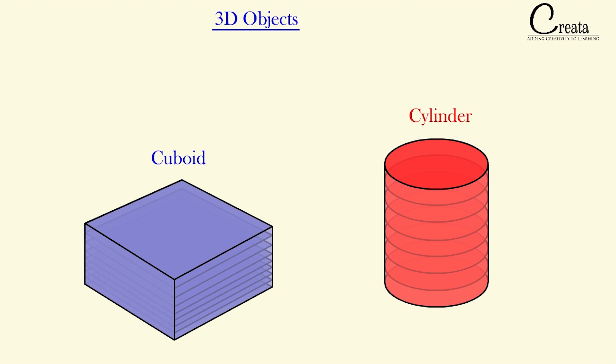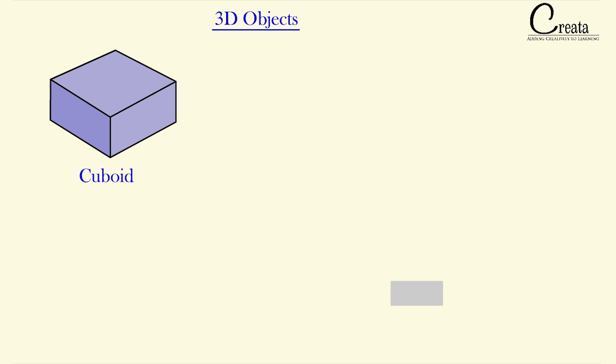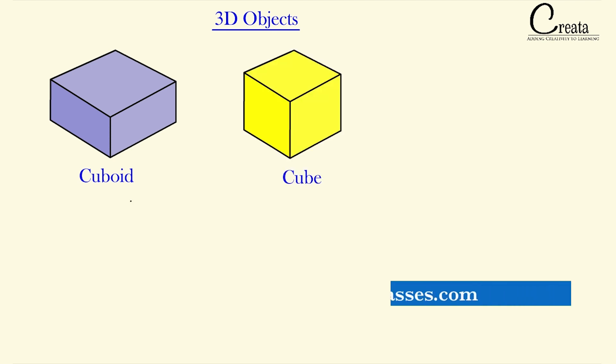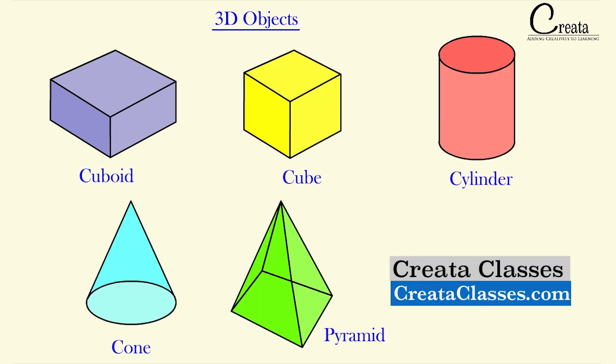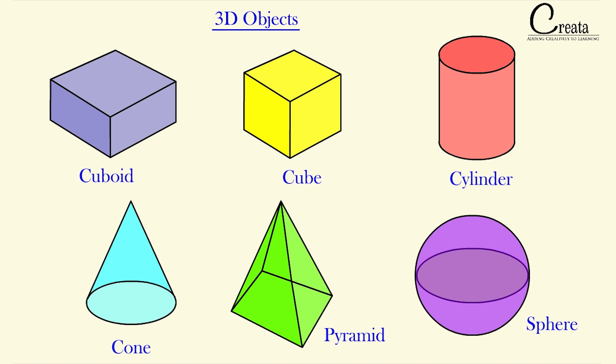In this lecture we will cover several types of 3D objects, which include the cuboid, cube, cylinder, cone, pyramid, sphere, prism, and many more 3D objects.